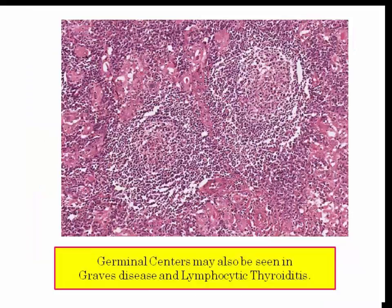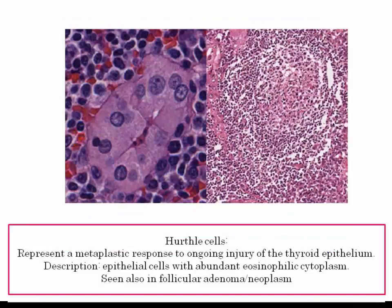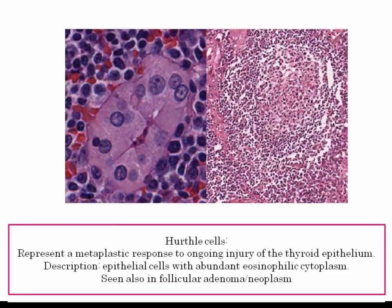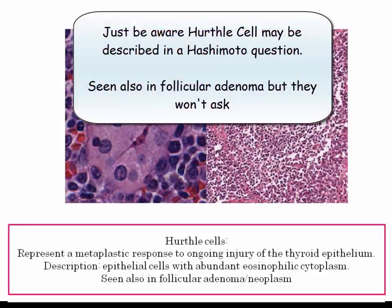Germinal centers may also be seen in Graves' disease and lymphocytic thyroiditis, but both these conditions present with hyperthyroidism. The second pathologic finding in Hashimoto's is the Hurthle cell, which represents a metaplastic response to ongoing injury of thyroid cuboidal epithelium. They may be described as epithelial cells with abundant eosinophilic granular cytoplasm, and may also be seen in follicular adenomas or neoplasm. Should you encounter them, don't get confused about Hashimoto's descriptions.